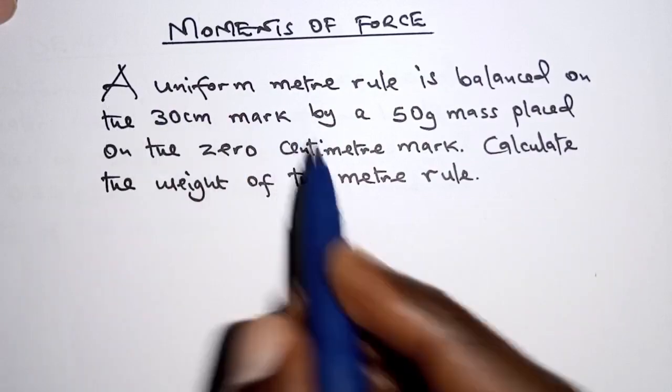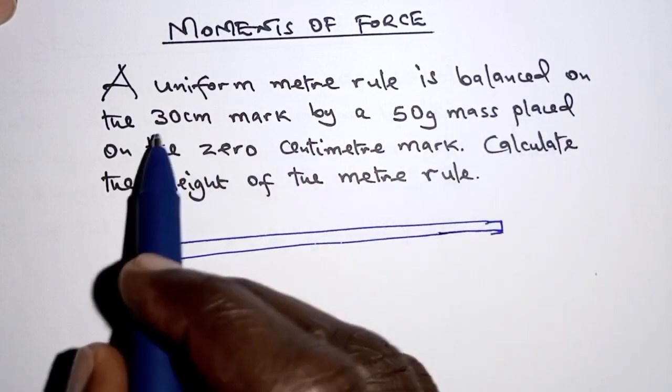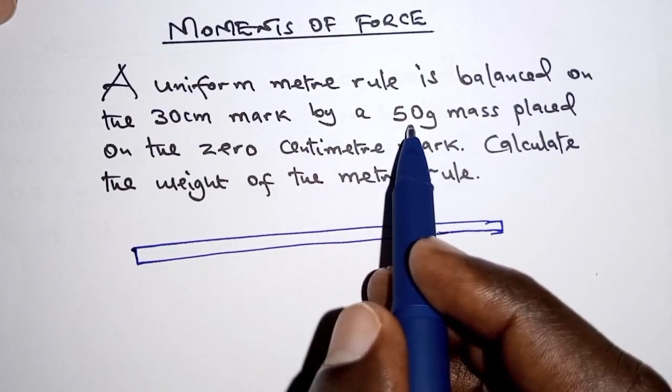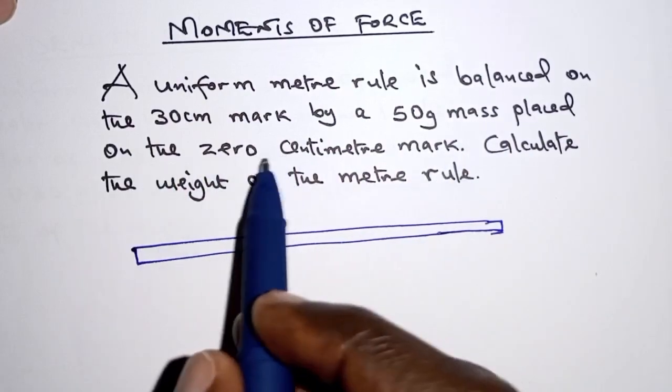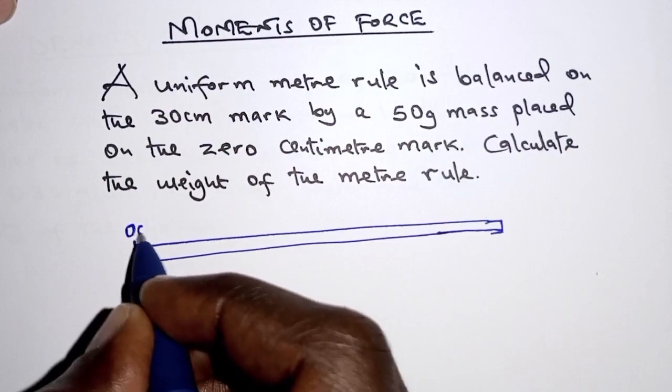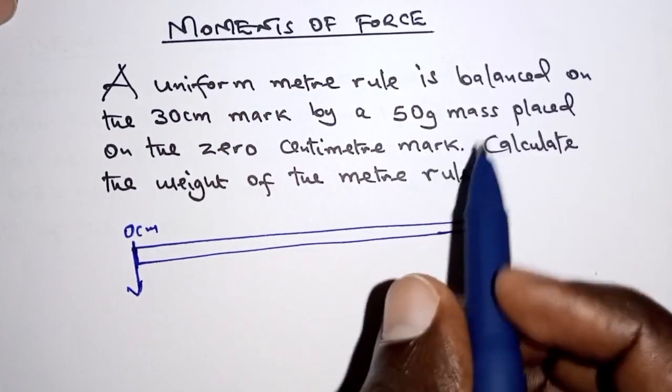So we have a uniform meter rule. It is balanced at 30 centimeters mark by 50 grams mass placed on the zero centimeters mark. So if we have zero centimeters here, then we have a 50 gram mass placed.